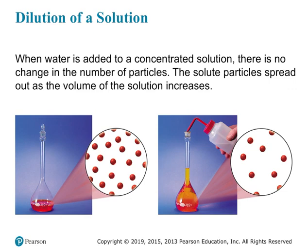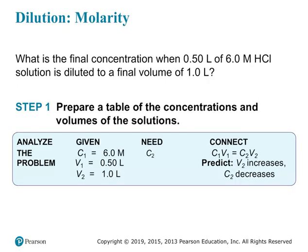If we have a concentrated solution, the solute particles are all close together. When we add water, those particles spread out more — the same number of solute particles, just spread over a larger volume. So it's only the volume and concentration that change. Let's do a practice problem: What is the final concentration when 0.5 liters of 6 molar hydrochloric acid is diluted to a final volume of 1 liter?